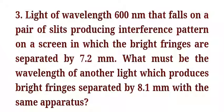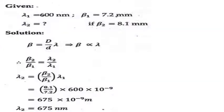Using the formula for fringe bandwidth: lambda 1 is given as 609 nanometers. The bandwidth — the distance between two consecutive bright or two consecutive dark fringes — is beta 1 = 7.2 mm for the first wavelength, and beta 2 = 8.1 mm for the second wavelength.